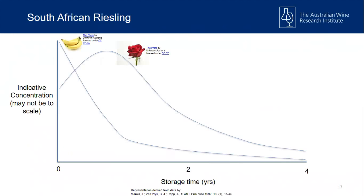This is work done on South African Riesling quite a number of years ago — they took Rieslings stored over four years and tracked compounds changing over time. In young wines we get ethyl esters contributing to banana and linalool for rose. As the wine ages, esters drop off relatively quickly; there's a bit of a spike in monoterpene as it's released from its bound form, and then that slowly degrades.